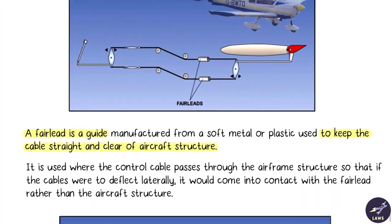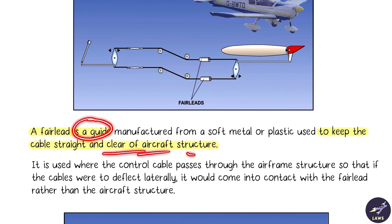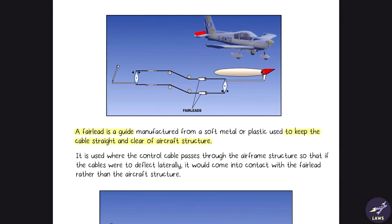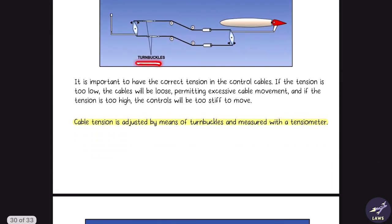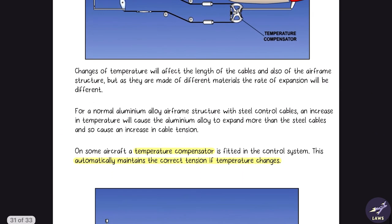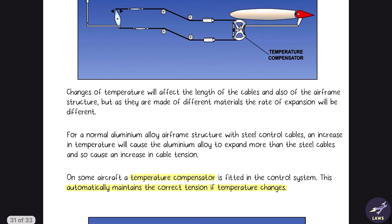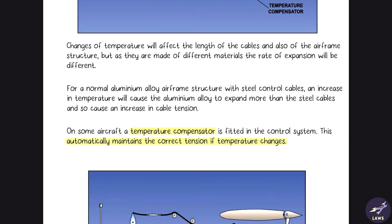A fair lead is a guide to keep the cable straight and clear of the aircraft structure. Cable tension is adjusted by means of turnbuckles and measured with a tensiometer. On some aircraft, a temperature compensator is used — when temperature increases, cable wires may expand and tension may be lost, so the temperature compensator automatically maintains the correct tension when temperature changes.